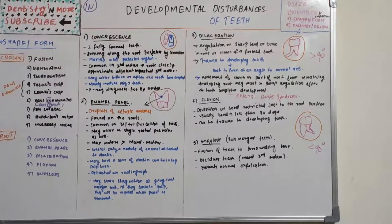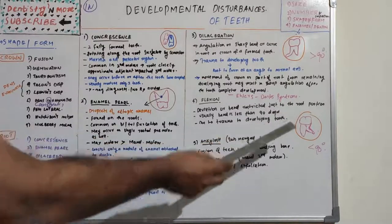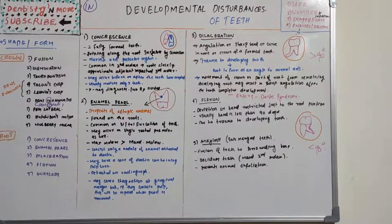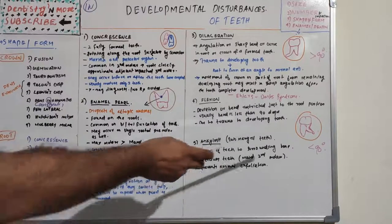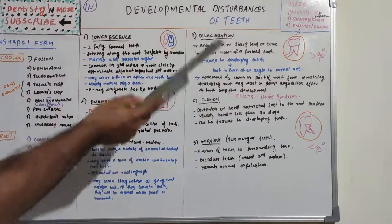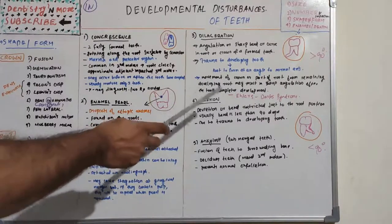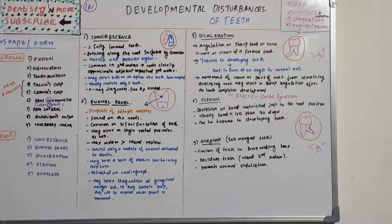Next is flexion. Flexion is a deviation or bend restricted just to the root portion, and this bend is less than 90 degrees. That is the key difference between flexion and dilaceration: in dilaceration, the bend is greater than 90 degrees, whereas in flexion the bend is less than 90 degrees. Flexion is also caused by trauma to the developing tooth.